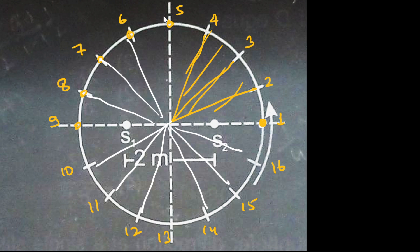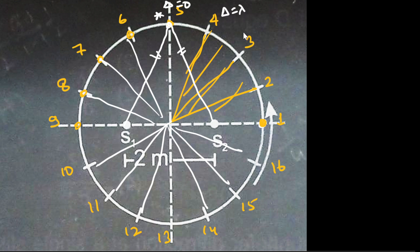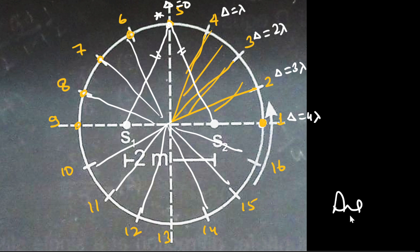Why is there a 5th maxima in the quadrant? From S1 and S2, when the path difference is 0 we get one maximum. Then for n=1 the path difference is lambda, then 2 lambda, then 3 lambda, then 4 lambda — giving us 5 conditions satisfied. Accounting for all quadrants and the shared boundary maxima, the total number of maxima detected is 16.